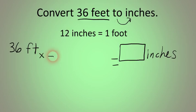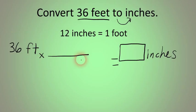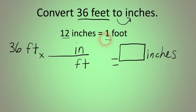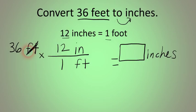We're going to set up a little fraction bar, and this is where our unit conversion factor is going to go. We have feet as our beginning unit, so we put feet in the denominator of the conversion factor so that it cancels out with the feet we started with. From algebra, you know that something in the numerator and something in the denominator will cancel as long as you're multiplying them. We're converting to inches, so we put inches in the numerator. We're given that 12 inches equals 1 foot, so we put those numbers in their corresponding locations in the conversion factor.